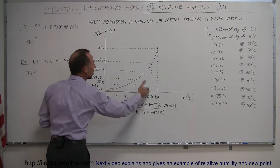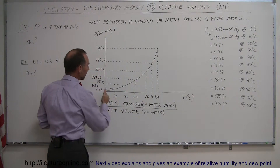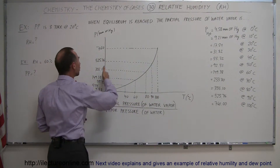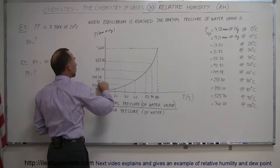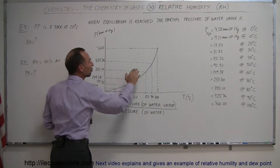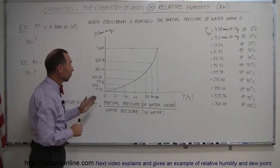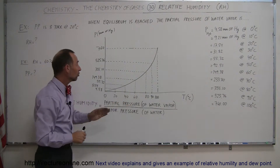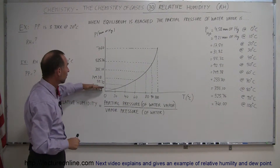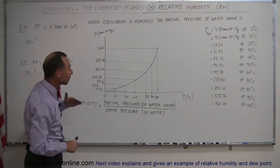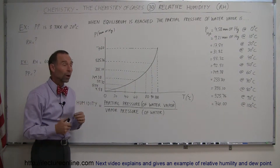Here you can see a diagram of that. The higher the temperature of the air, the more moisture it can hold, and the greater the partial pressure of water vapor can be as a percentage of the total pressure of the air. As the temperature gets quite large in centigrade degrees, the amount of water that the air can hold is quite large.